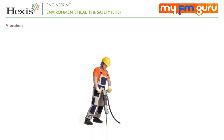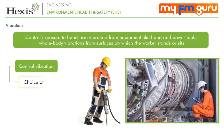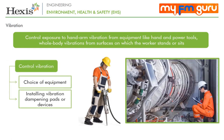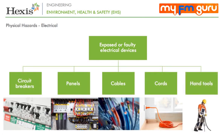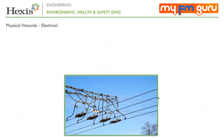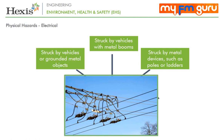Vibration can cause long-term painful damage to a worker's hands and fingers. Exposure to hand-arm vibration from equipment such as hand and power tools, or whole body vibrations from surfaces on which the worker stands or sits, should be controlled using choice of equipment, installing vibration dampening pads or devices and limiting the duration of exposure. Exposed or faulty electrical devices such as circuit breakers, panels, cables, cords and hand tools can pose a serious risk to workers. Overhead wires can be struck by metal devices, and vehicles or grounded metal objects brought close to overhead wires can result in arcing without actual contact.